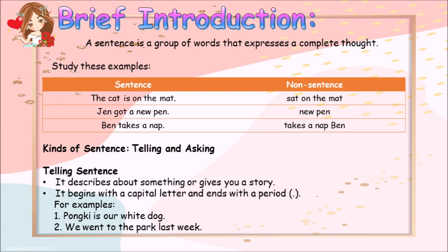Let's study these examples. The first column shows examples of sentences. The second column shows examples of non-sentences. For example, 'Sat on the mat' is a non-sentence.